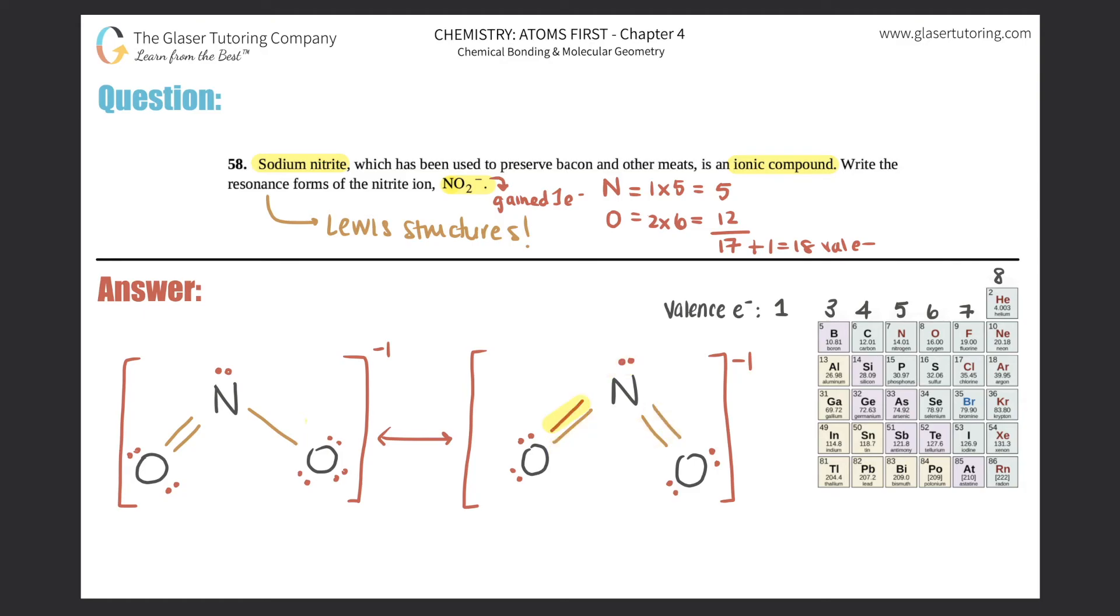Only elements that are below period 2—this is period 2, nitrogen is in period 2—so unfortunately that cannot work. So I'm just going to erase that.